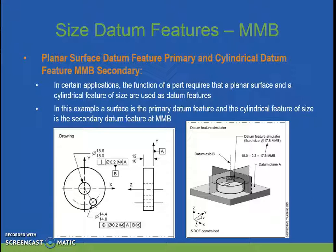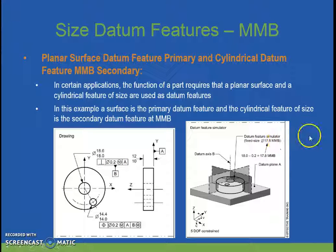This is a planar surface datum feature primary and cylindrical datum feature MMB secondary. The primary does not have any modifier on it, so it is regardless of material boundary, and the part on datum A would sit flat on the plate. However, datum B is being referenced here at maximum material boundary, so it would be a fixed size pin at the MMB condition, also taking into consideration the tolerance value. So 18.0 minus 0.2 gives you 17.8 as your MMB.